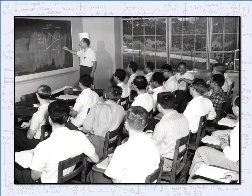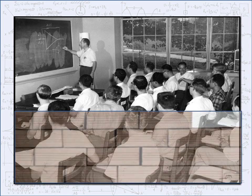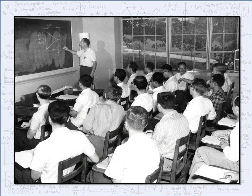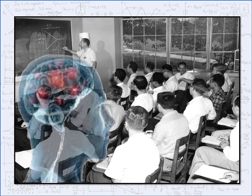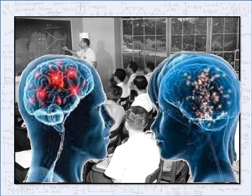We know a lot more today than we did then. We know that there are structural differences in both the physical brain and chemical processes of thought and learning between the genders. And these findings are based on hard science, using objectively verified and measurable qualities.